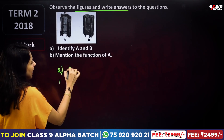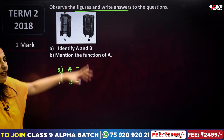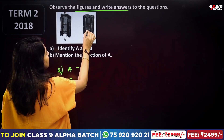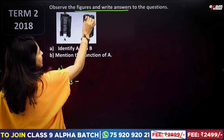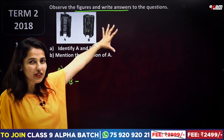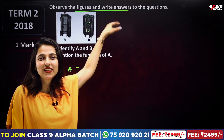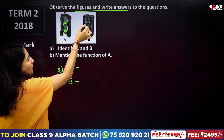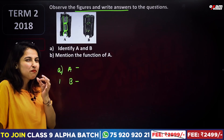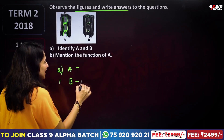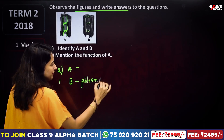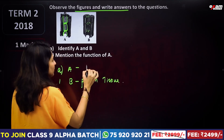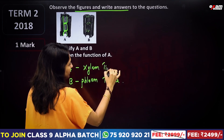This picture is very clear. Here we have poles — pores, or sieve plates. Here we have phloem vessels. And these tissues as A and B — xylem tissues.